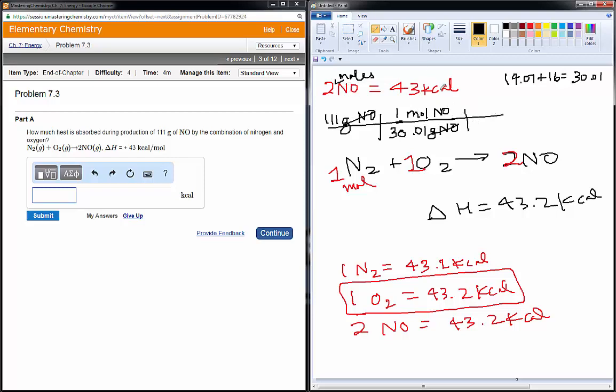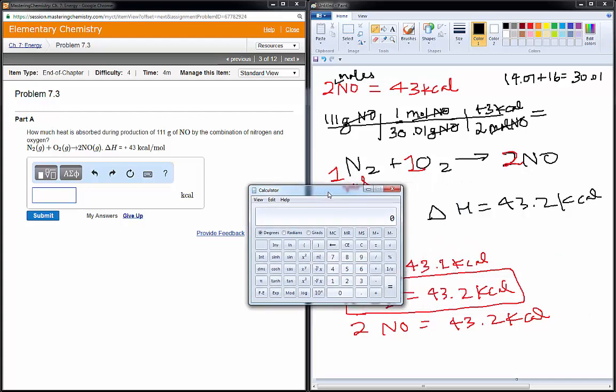Mole's on top. Next, we know that two moles of NO require 43 kcals of heat. So, our moles of NO will cancel.